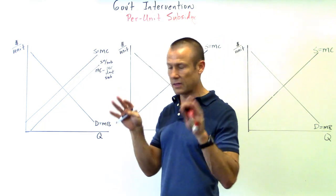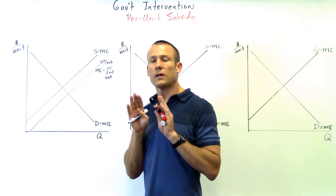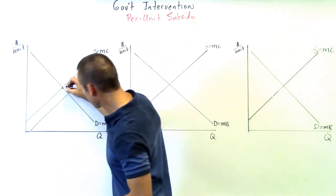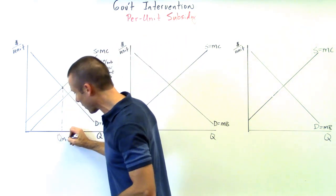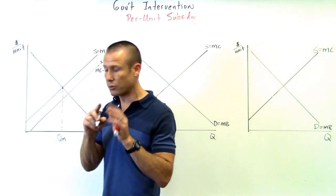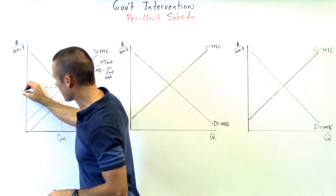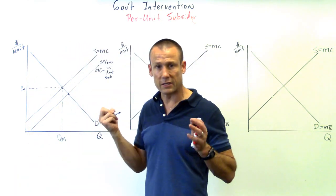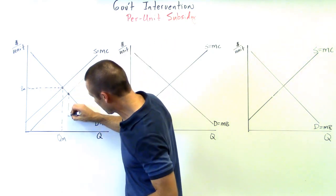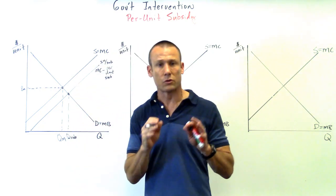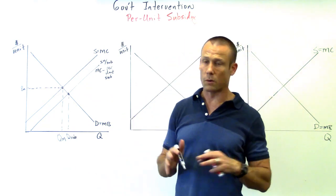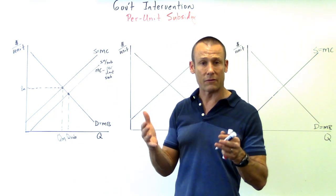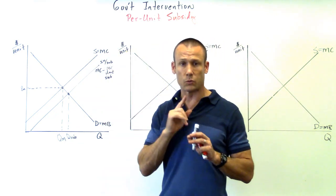Let's annotate everything. Pre-subsidy, supply and demand intersected at quantity market and price market. Post-subsidy, the new curves intersect at a new point. The supply curve shifted right, so we get more quantity supplied at every price point because that marginal cost went down.